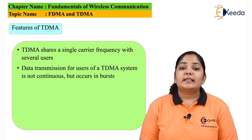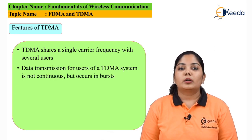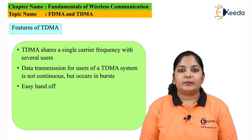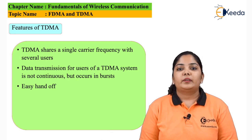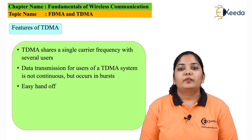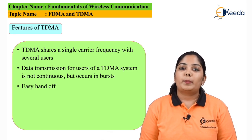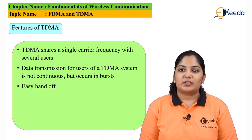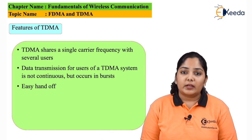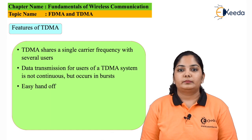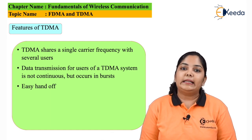The data transmitted in TDMA is in a discontinuous or buffer-and-burst manner. Handoff is easy in TDMA because if the user is transmitting in one time slot, the mobile remains idle during the other time slots. That idle time can be used to identify the power levels from neighboring base stations. If the power levels are higher than the current base station, handoff procedures may begin. Hence, easy handoff is an advantage of TDMA over FDMA.